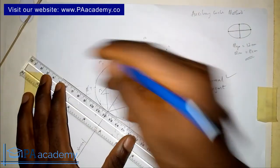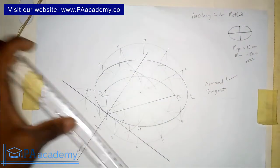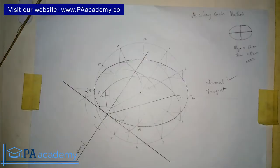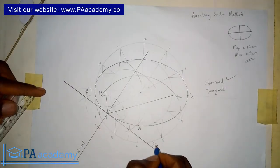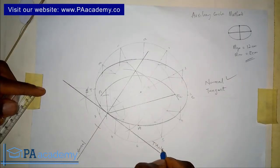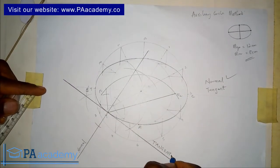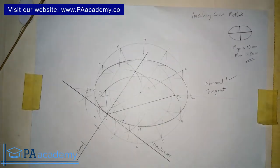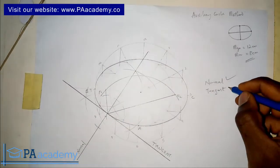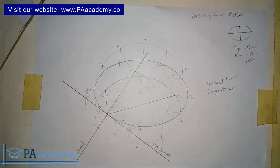This line I've just drawn is the tangent. So this is how you draw a normal and a tangent to an ellipse.